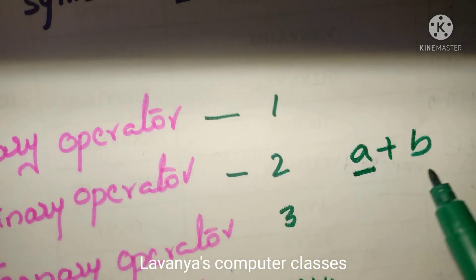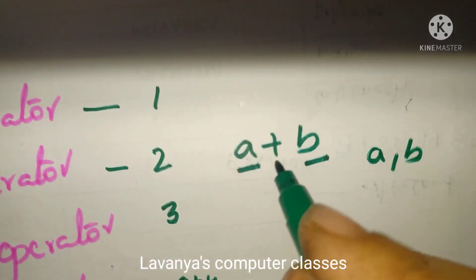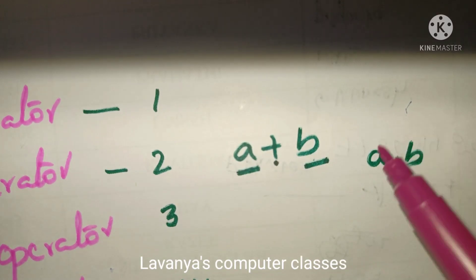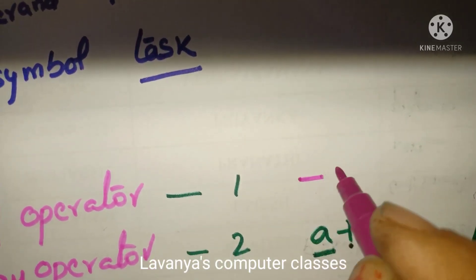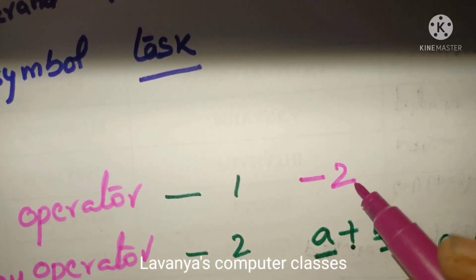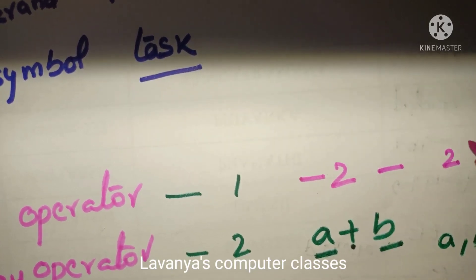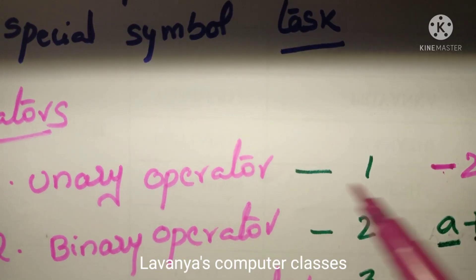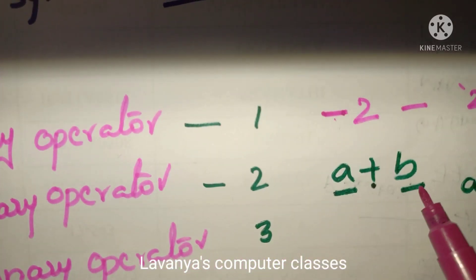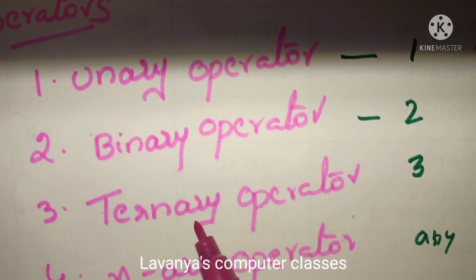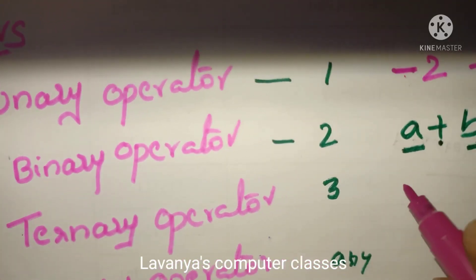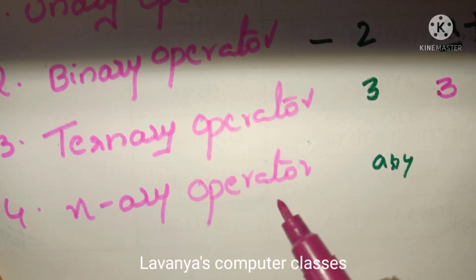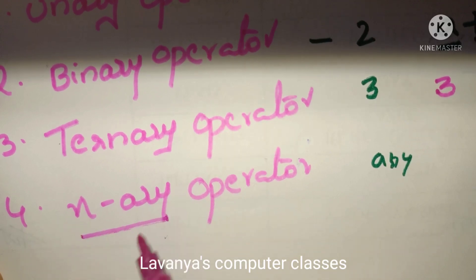In A plus B, A and B are operands and plus is the operator working on minimum two variables — that's why it is a binary operator. Unary means 1 only. For example, minus 2: the number 2 is a positive number, but when we put minus before it, minus is an operator working on only one operand — that is why it is called a unary operator. Ternary means any operator working on three operands. N-ary means any operator working on more than three operands.